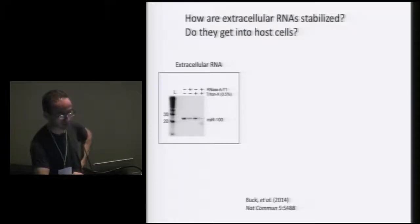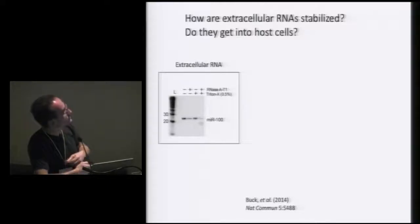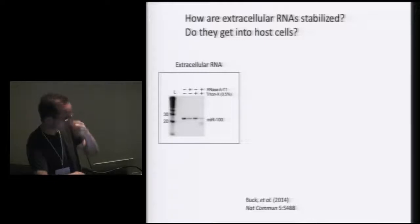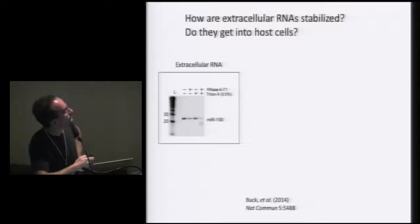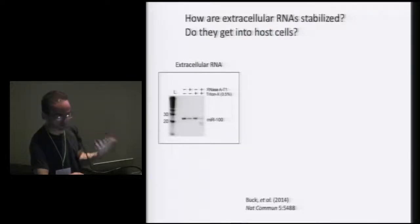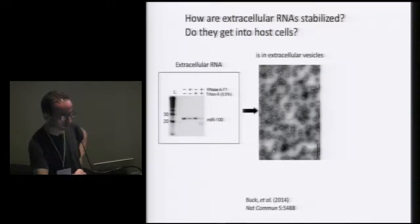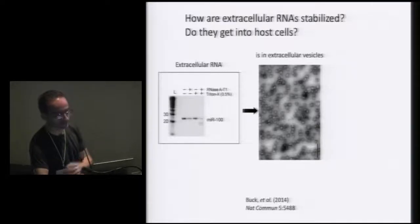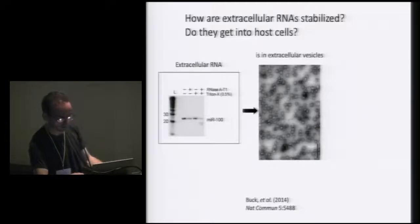Different questions arise: how are these extracellular RNAs stabilized, and do they actually get into host cells? A northern blot experiment shows that the secretion products are treated by RNase and seem quite stable. But when treated with an agent that disrupts membranes, RNase actually degrades the RNA—so they seem to be protected by membrane. Looking by electron microscopy, there are tiny vesicles which seem to be exosomes or at least extracellular vesicles. These extracellular vesicles contain a cargo that includes RNAs and microRNAs, and this would be the way in which RNAs are stabilized extracellularly, potentially delivering cargo to mouse cells.